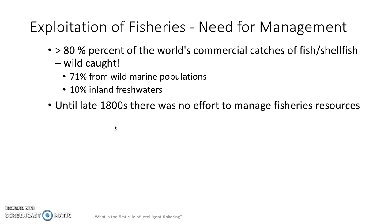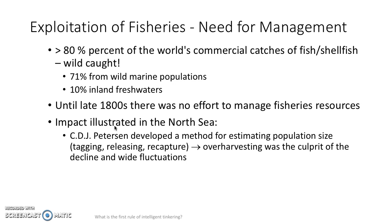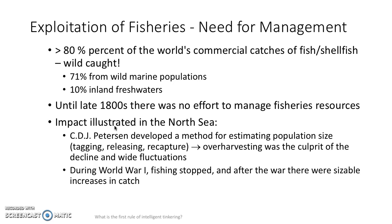Until the late 1800s, there was no effort to manage fisheries or resources. Remember, the ocean is vast — quite vast. The impact has been well illustrated in the North Sea. A fellow named Peterson developed a method for estimating population size with tag, release, and recapture to see how many fish there were. Over-harvest was the culprit of this decline and some wide fluctuations in the fish. In World War I, fishing had to stop because of war. After the war, we came up with new ways of catching fish and saw sizable increases in catch.